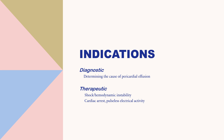Fluid pH can differentiate between inflammatory and non-inflammatory fluid, because inflammatory fluid will be more acidic with a lower pH. In some cases where you are suspecting a specific cause, additional diagnostic testing can be done — such as adenosine deaminase if you are suspecting TB, and carcinoembryonic antigen (CEA) if suspecting malignancy.